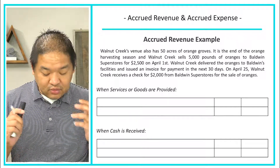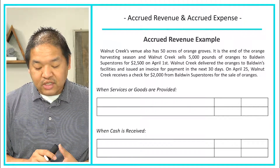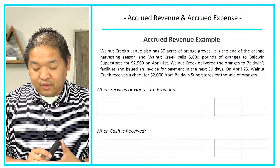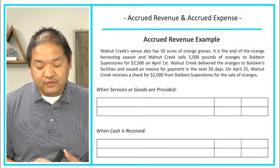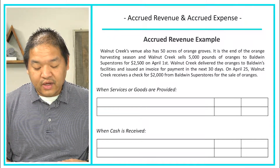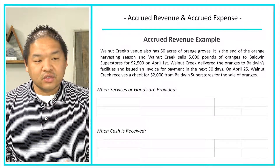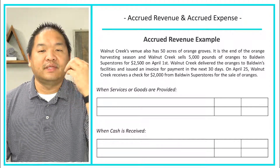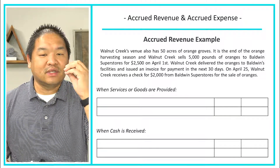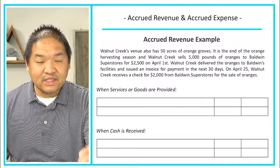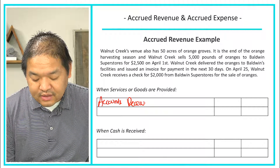Here's an example: Walnut Creek Venue has 50 acres of orange groves. It is the end of the orange harvesting season and Walnut Creek sells 5,000 pounds of oranges to Baldwin Superstores for $2,500. On April 1st, Walnut Creek delivered the oranges and issued an invoice for payment within 30 days. When they deliver the oranges, the performance obligation is completed, the revenue is earned, but they haven't received cash yet, so they book Accounts Receivable.